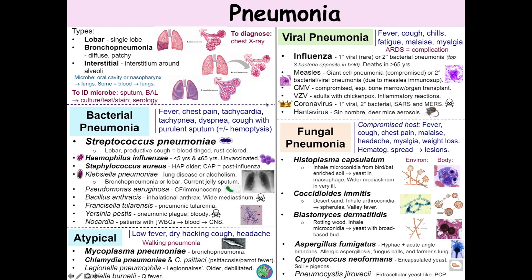Coronavirus has that wonderful appearance where it looks like a crown under the microscope. It can cause pneumonia on its own and can also cause a secondary bacterial pneumonia. Remember that important serotypes cause more serious infections like SARS and MERS. Hantavirus — specifically Sin Nombre hantavirus — is transmitted in aerosols created by deer mice. This is a disease where you see pulmonary edema due to capillary leak caused by the virus infecting the endothelial cells of the blood vessels, particularly the capillaries.